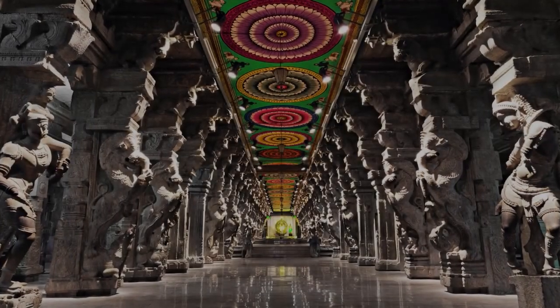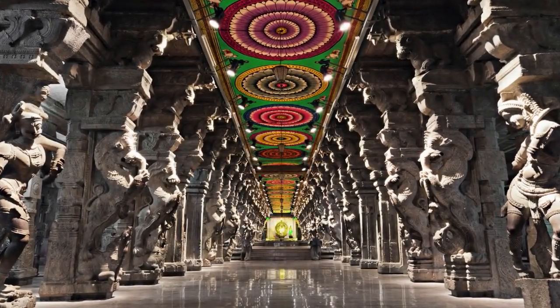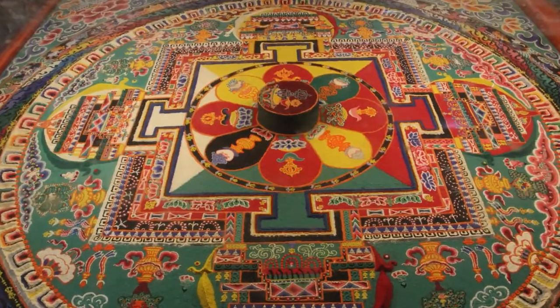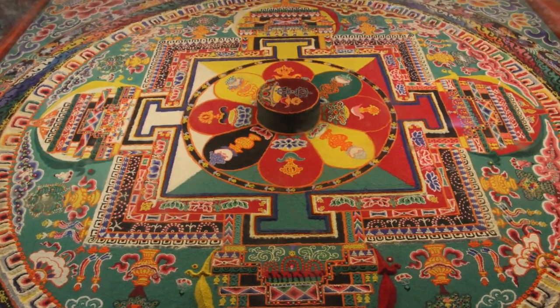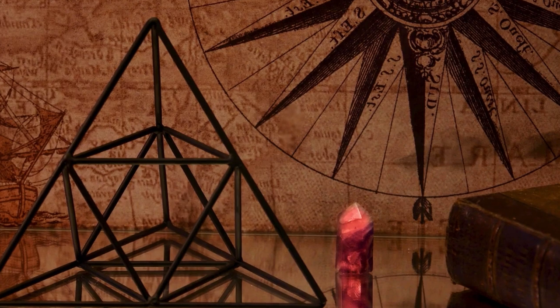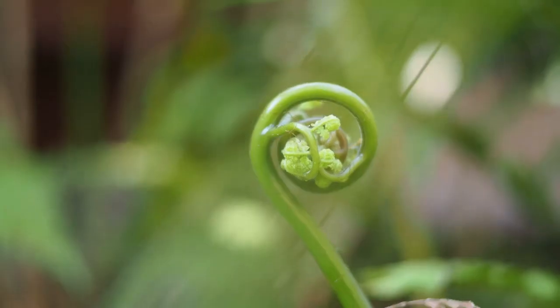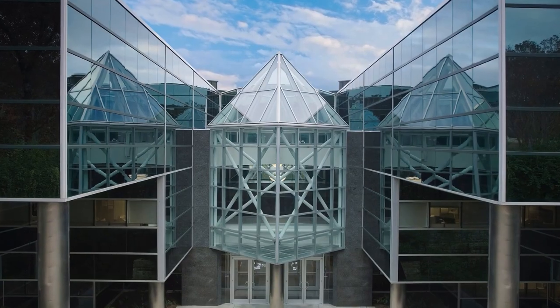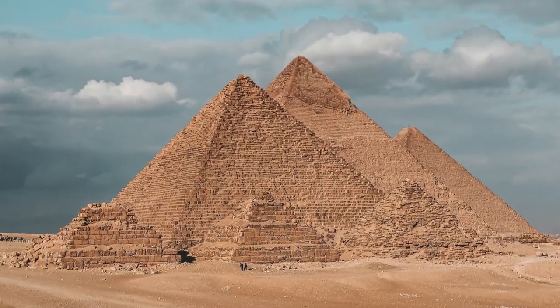In the East, the intricate mandala designs in Hindu and Buddhist traditions represent the universe and spiritual journey, embodying sacred geometry in their symmetrical and harmonious patterns. As you can see, examples of sacred geometry can be found everywhere in nature and man-made constructions from ancient times.